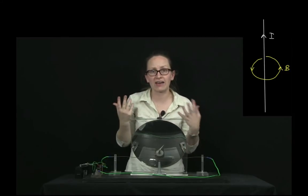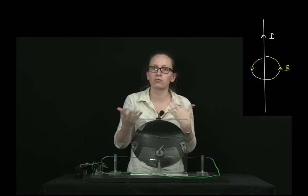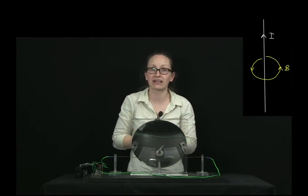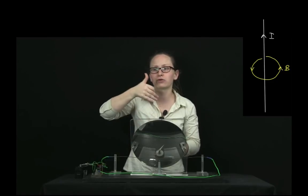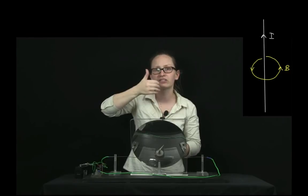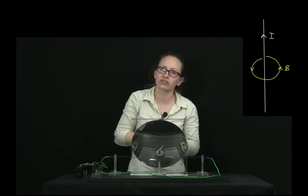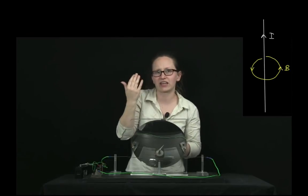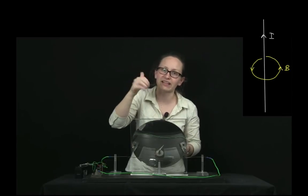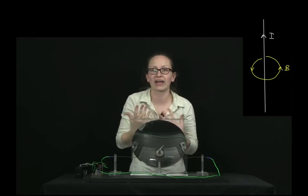So we actually have another right-hand rule for working out the direction of the magnetic field around a current. Now, this is commonly known as the right-hand screw rule. So in this rule, your thumb points in the direction of the current and your fingers then wrap around the wire showing the direction of the magnetic field. So once again, because you've got lots of fingers, there's lots of magnetic field lines wrapping around the wire like that.